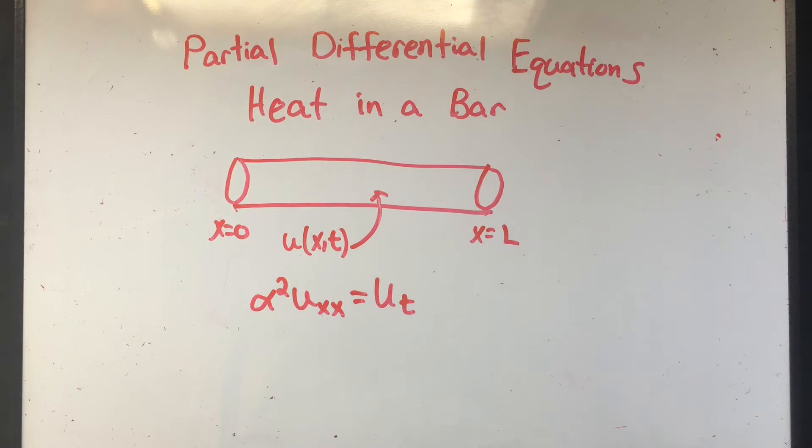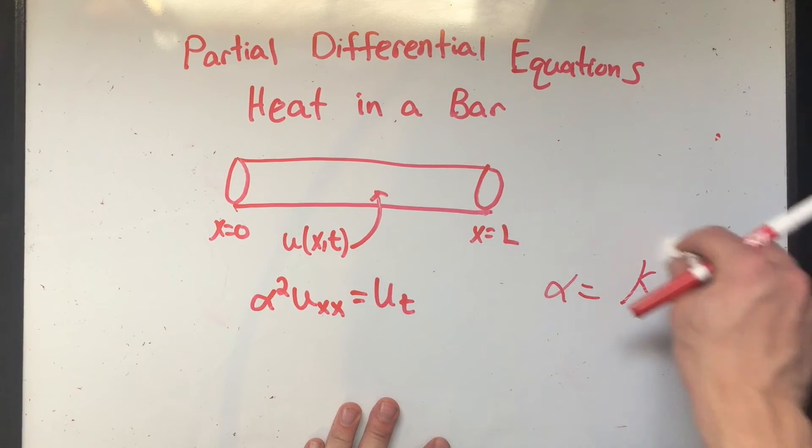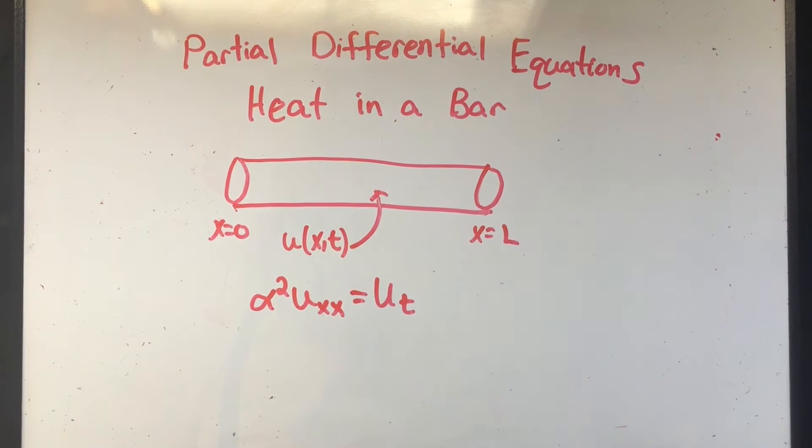We're not going to be too concerned with the actual value of alpha. If you're really interested in it, alpha is, look it up here. K or kappa, which is the thermal conductivity over rho, the density times S, which is the specific heat of the material in the bar. So I'm not going to be worried about any of that. I'm just going to treat alpha like a number. If you're really into like engineering and physics stuff, maybe you're more interested in that. But not me.